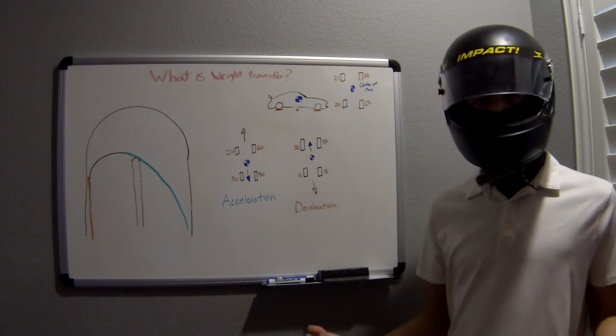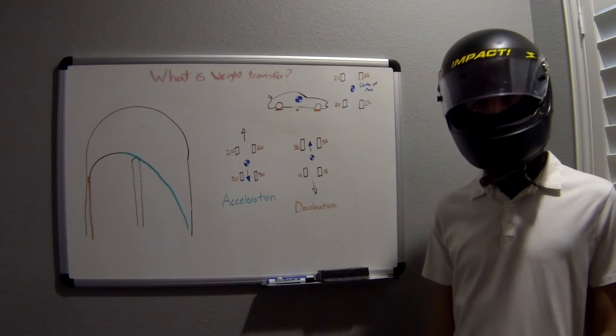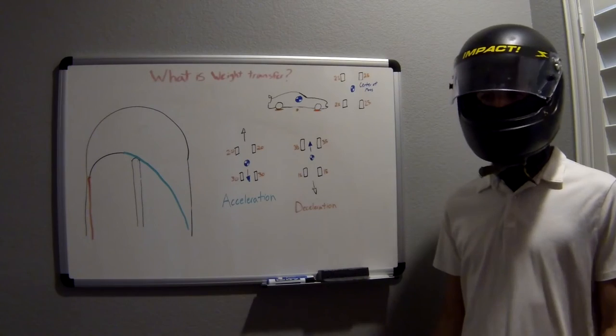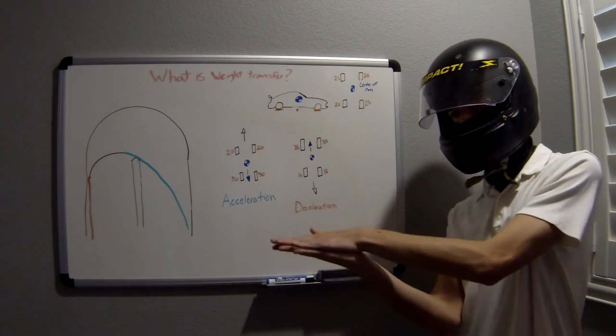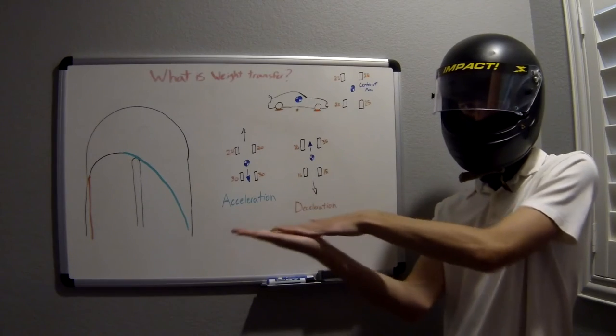Now that we understand what is causing weight transfer, it is easy to see where the weight of the car will be in a variety of situations. Something important to note is when more weight is placed on a specific tire, that tire gains traction. Similarly, a tire loses traction when weight is removed from that specific tire.